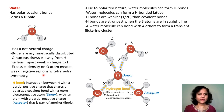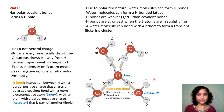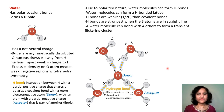A hydrogen bond is an interaction between a hydrogen that has a positive charge sharing a polarized covalent bond with a more electronegative atom — referred to as the donor — and an atom with a partial negative charge, which is the acceptor, that is part of another dipole. Due to the polarized nature of water, water molecules can form hydrogen bonds and form a hydrogen-bonded lattice. Hydrogen bonds are of course much weaker than covalent bonds.